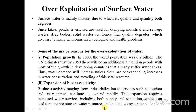Now we will see the next point: overexploitation of surface water. Surface water is mainly misused, due to which its quality and quantity both degrade. Since lakes, ponds, rivers, and seas are used for dumping industrial and sewage waste, dead bodies, solid waste, etc., their quality degrades, giving rise to many environmental, ecological, and health problems. Some of the major reasons for the overexploitation of water are: first, population growth; second, expansion of business activity, and so on.